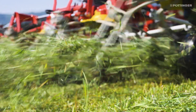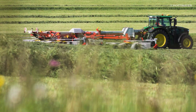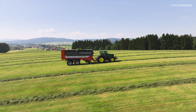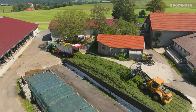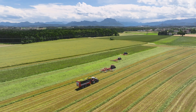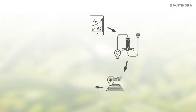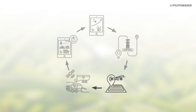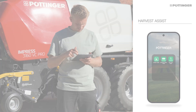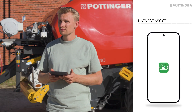Smart Harvest Chain is a model for optimizing processes in grassland harvesting. The aim is to achieve higher output with the same number of machines. To achieve this, the harvest is defined as a closed loop and optimized intelligently according to five central processes: yield forecast, intelligent mowing, live tracking of swath status, smart harvest analysis. The Harvest Assist app is used as the central planning tool.